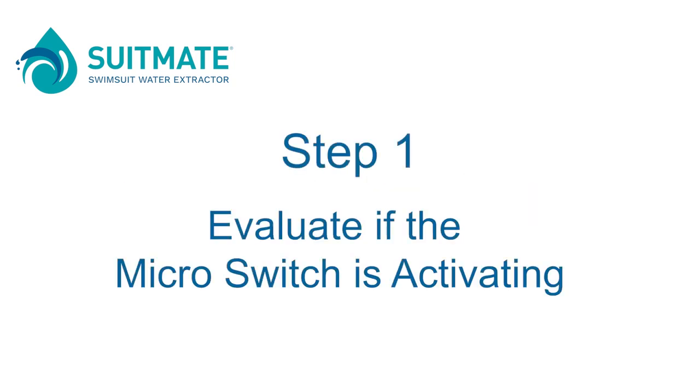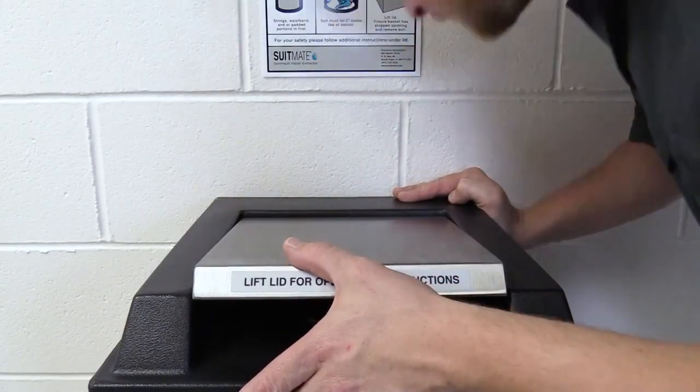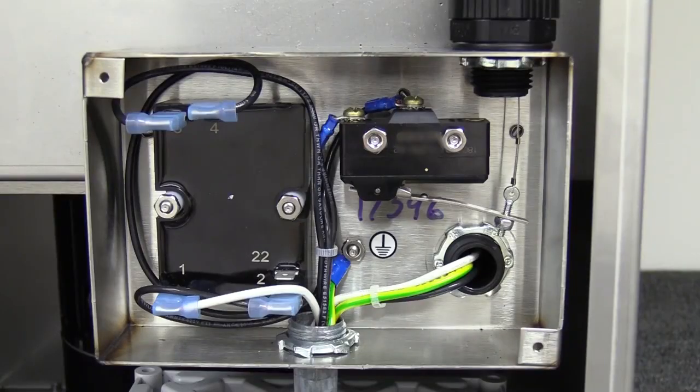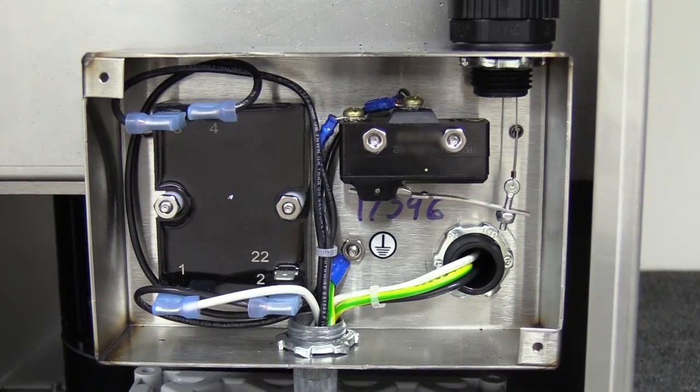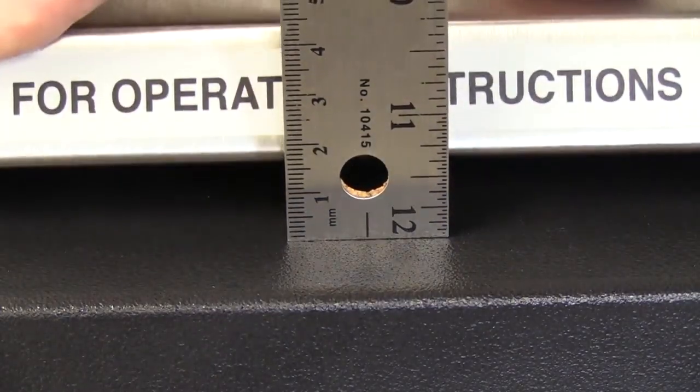Step 1. Evaluate if the microswitch is activating. Listen for a faint click as you depress the lid on the top of the unit. This click is the activation of the microswitch. The microswitch should click when the lid is approximately 6.4 mm from being completely depressed.